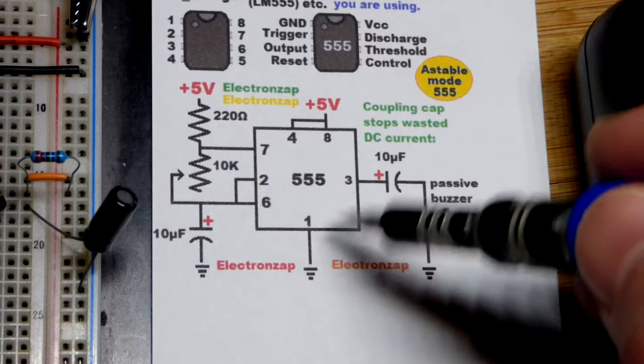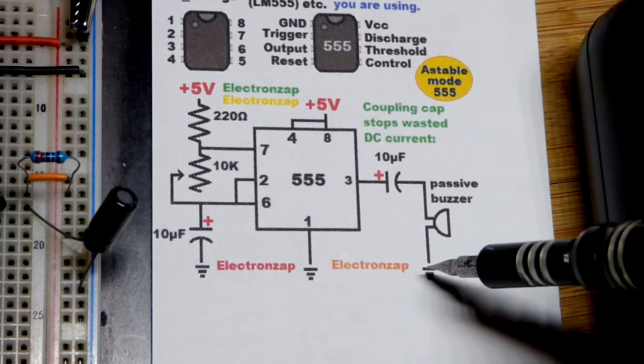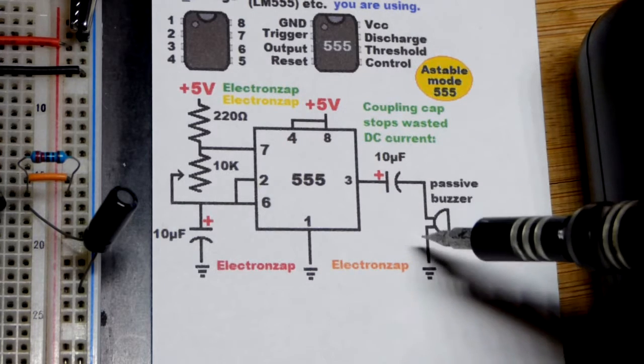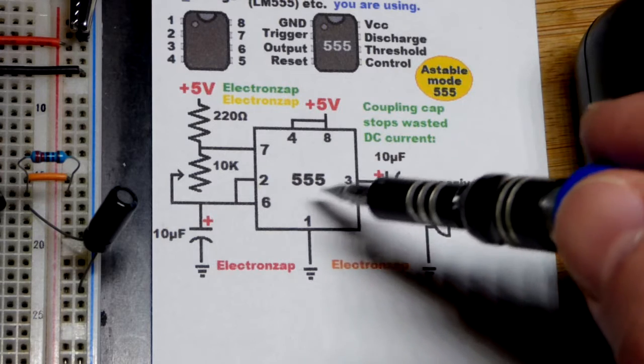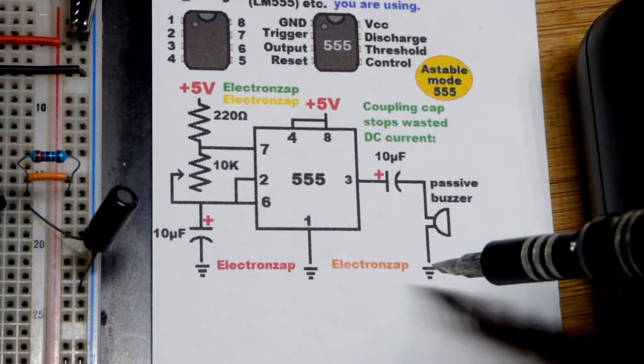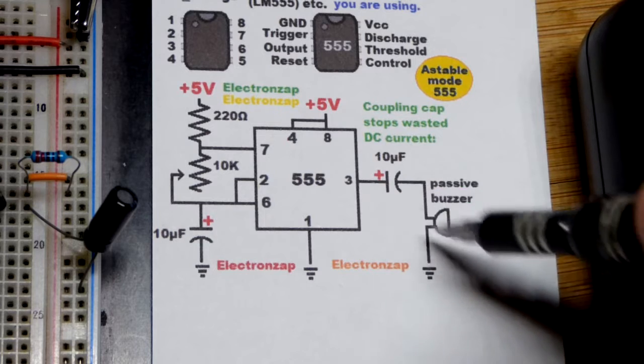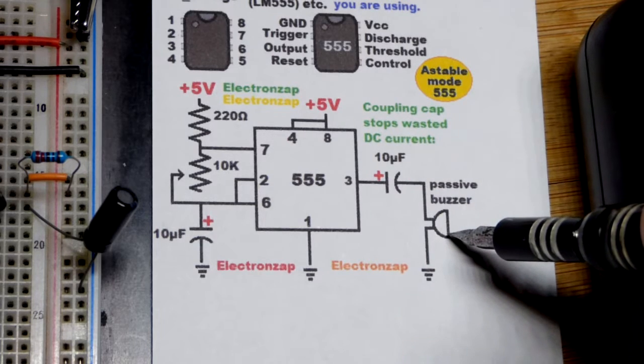Now without the capacitor when the output goes low you get a click still. But with the capacitor, the capacitor has to discharge so a little bit of current flows but not much. But it doesn't seem to make any difference when it comes to the sound of the clicks.